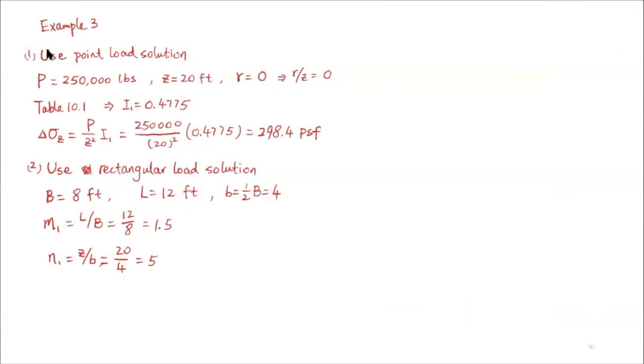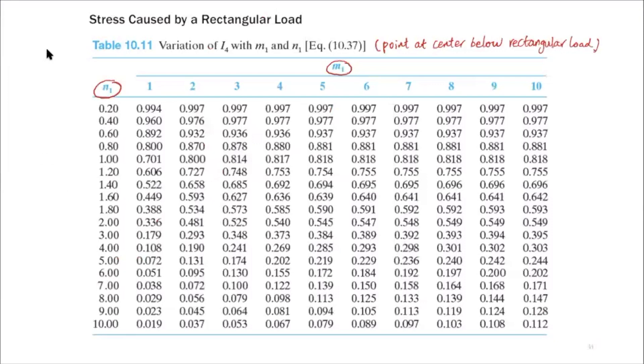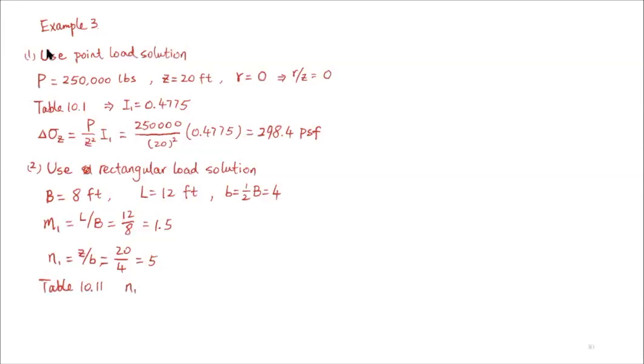We have N1 equals 5 and M1 equals 1.5. Since M1 of 1.5 is between 1 and 2, we'll use simple linear interpolation between these two values from the table for N1 equals 5.